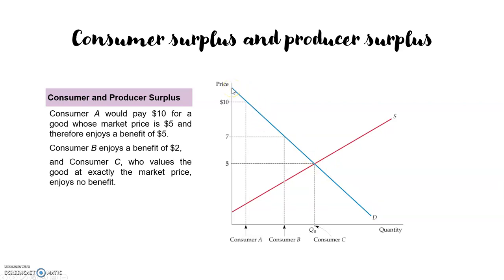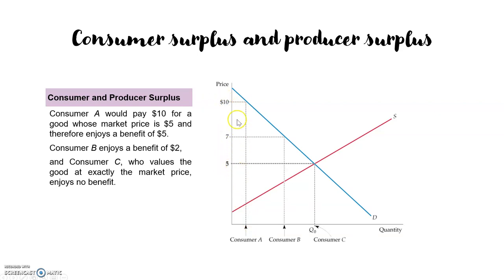The demand provides us further information — it tells us the reservation price of each consumer. For example, Consumer A has a reservation price of ten dollars for a good that in the market only has a price of five dollars. So this consumer enjoys a benefit of 10 minus 5; his surplus will be 5.